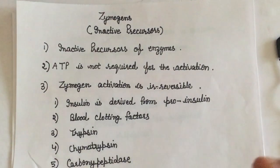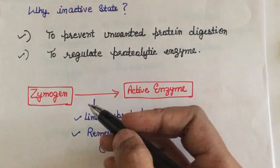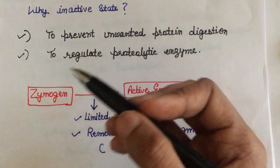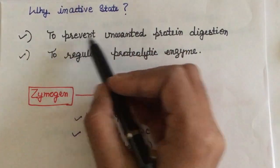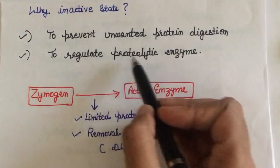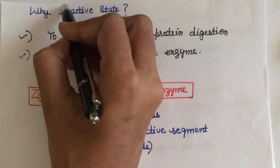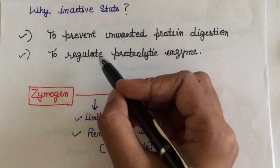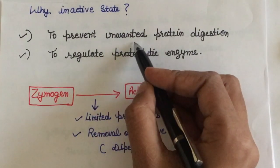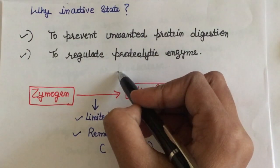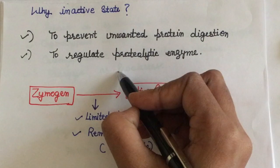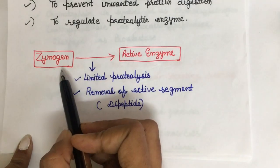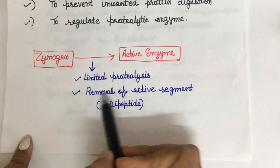The question arises: why are they synthesized in an inactive state? Firstly, it depends on their native conformation. Secondly, to prevent unwanted protein digestion and to regulate proteolytic enzymes, zymogens are synthesized in an inactive state. Most of these zymogens are synthesized in the pancreas, and when they get released from the pancreas into the gastrointestinal tract, they get activated there.